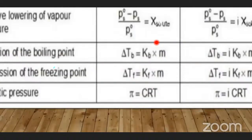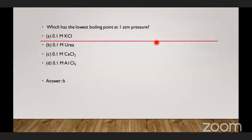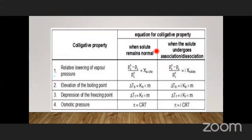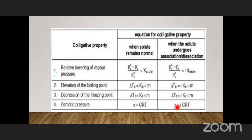For elevation in boiling point: ΔT_b = i × k_b × m, where m is molality. For depression in freezing point: ΔT_f = i × k_f × m, where m is also molality. For osmotic pressure: π = i × C × R × T, where C is molarity (moles per volume).